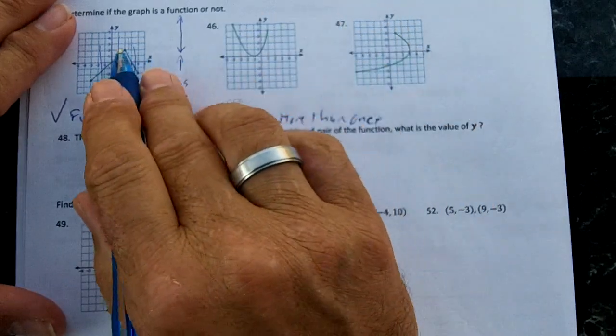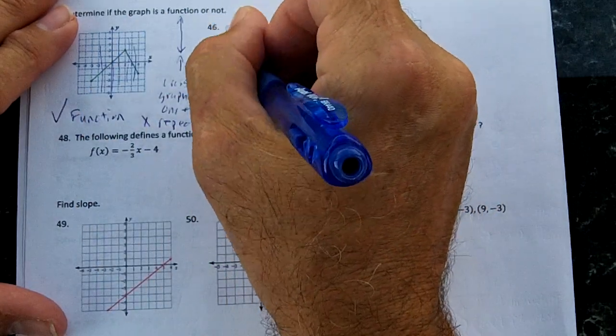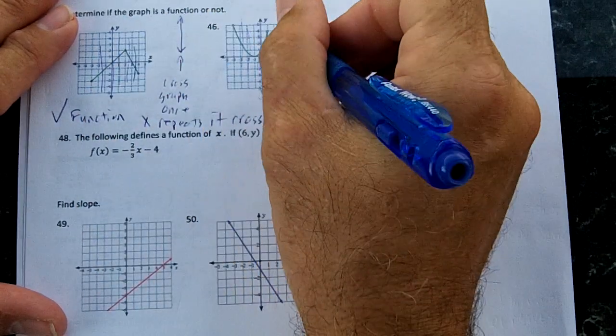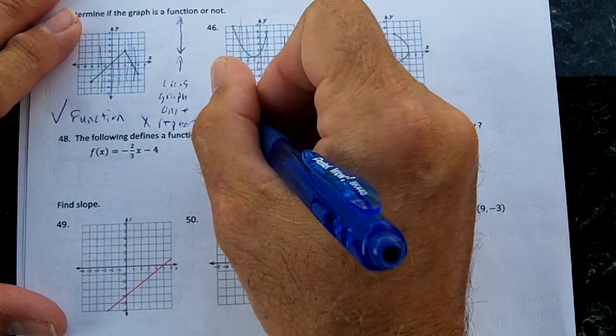That's an absolute value function. You'll learn about that in Algebra 2. This right here, draw a vertical line. Each one crosses once. Check. This is also a function.